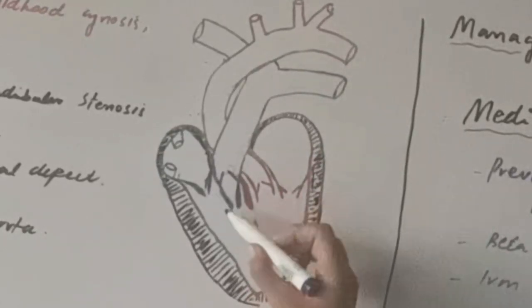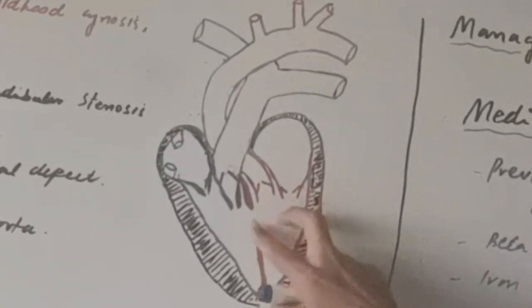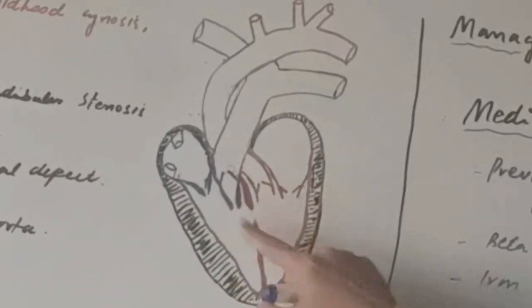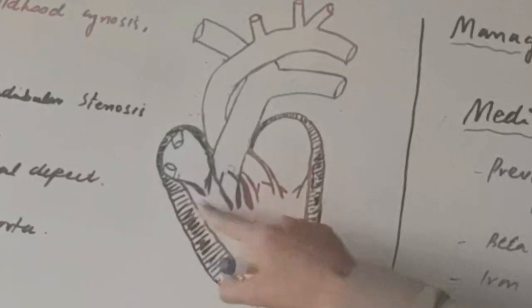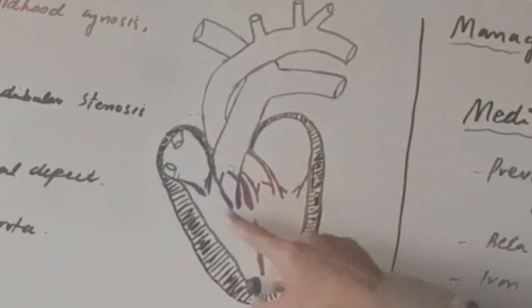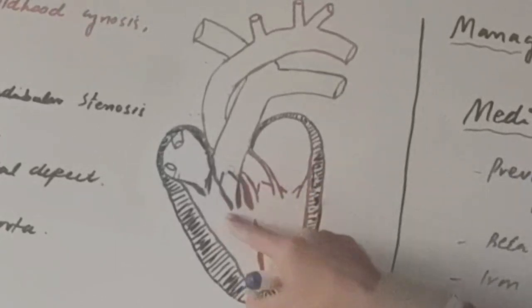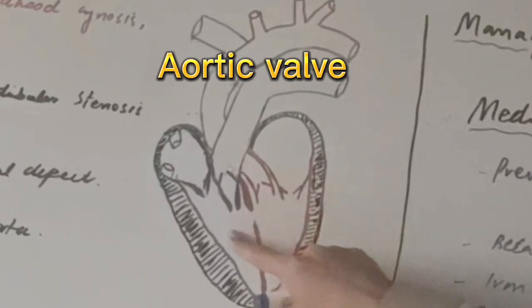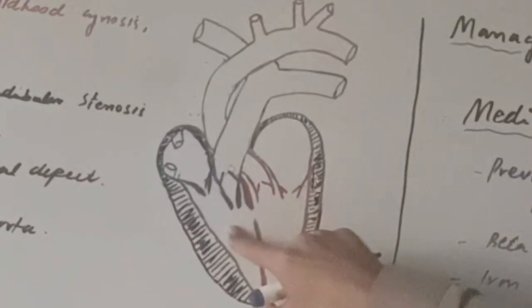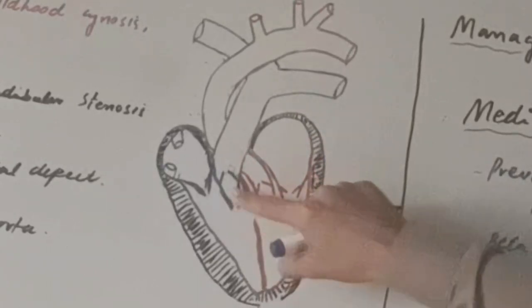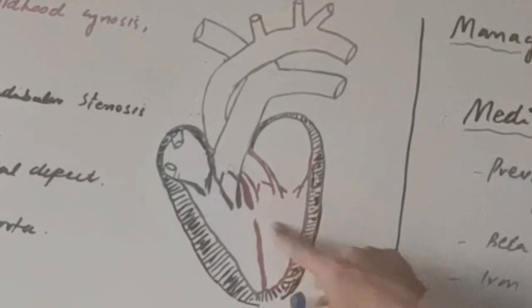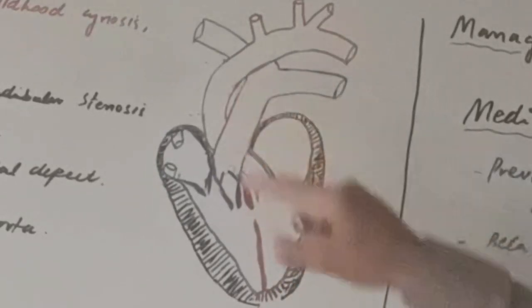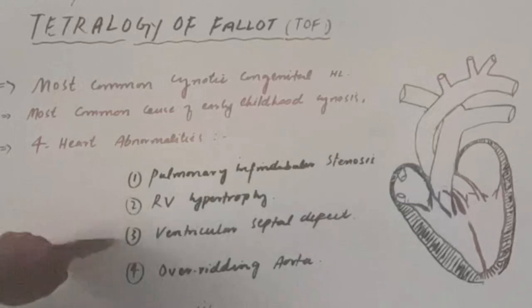The right ventricle and right atrium contain deoxygenated blood, shown in blue. The heart has four walls: two are the interventricular walls — the right interventricular wall and the left interventricular wall. There is also the pulmonary wall, through which blood from the right ventricle passes into the pulmonary artery, and the aortic wall, through which blood from the left ventricle passes into the aorta.